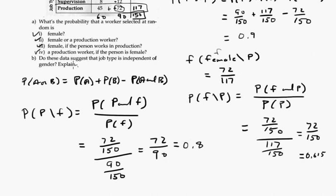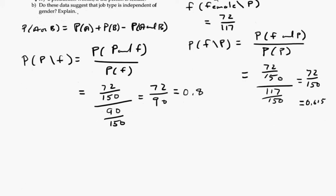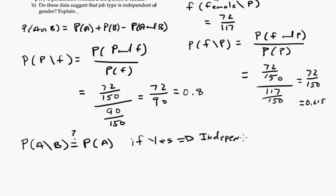So that's how you do these problems. Do these data suggest that job type is independent of gender? Well, a quick test is to just remember that the test for independence is, is the probability of A given B equal to the probability of A. In other words, if the condition doesn't matter, then they would be independent. If yes, they're independent. If no, they're not independent.